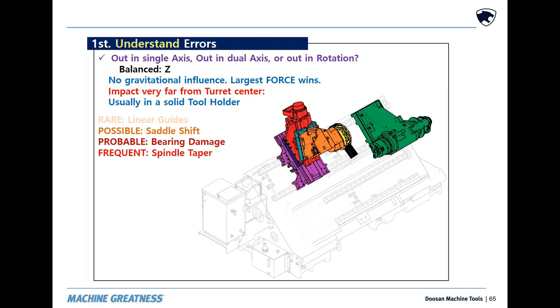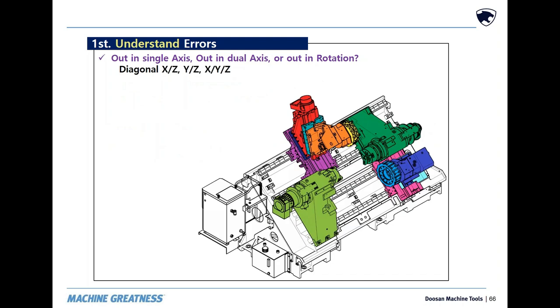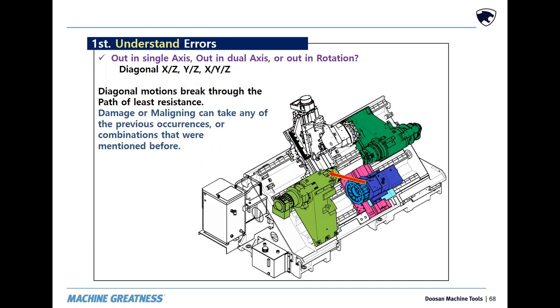Every time, the spindle will cut tapered after hitting. Now, diagonal movements of crashes create any possible combination.